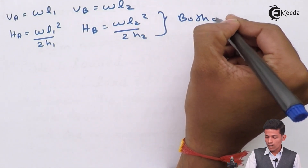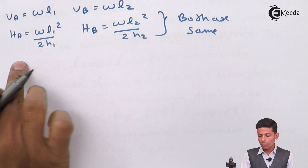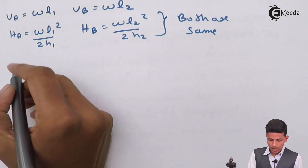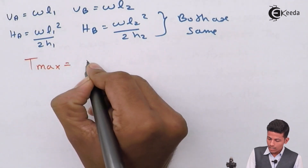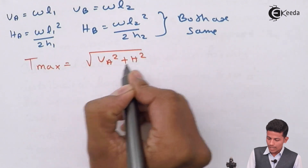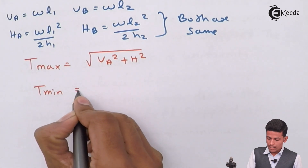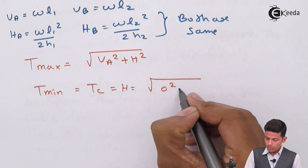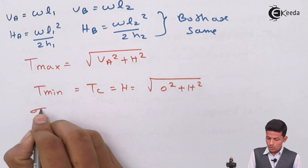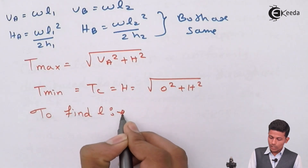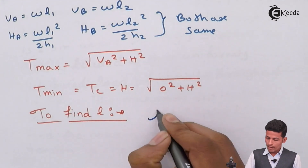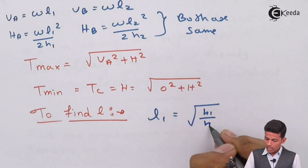Both HA and HB are equal — you can use either formula and you will get the same value. Tmax = √(VA² + H²), and T minimum, which is Tc = H (i.e., √(0² + H²)). To find L1, use the formula: L1 = √(H1/H2) × L2.